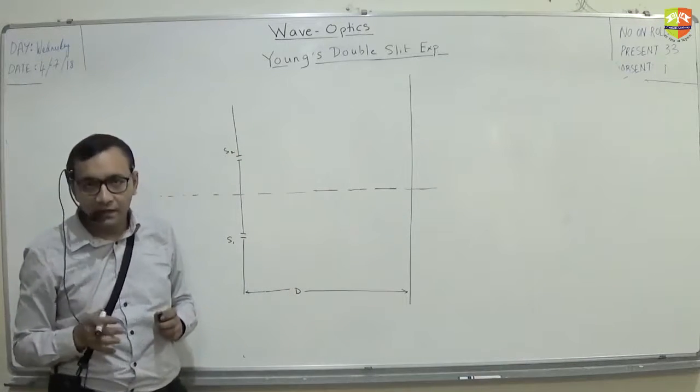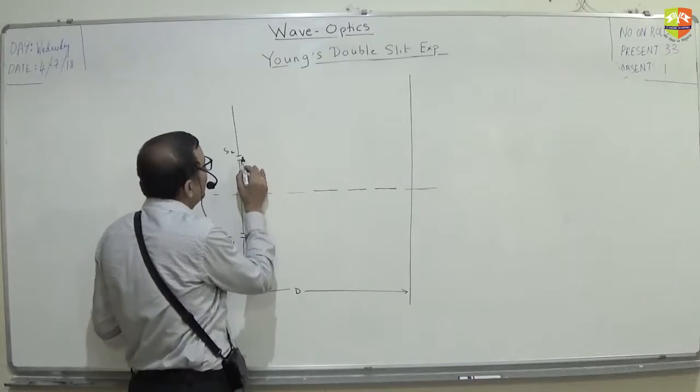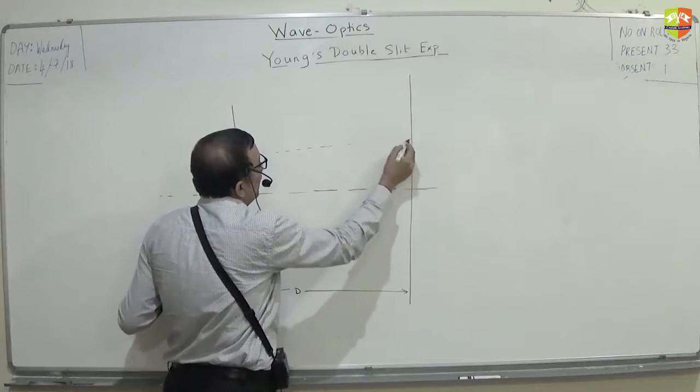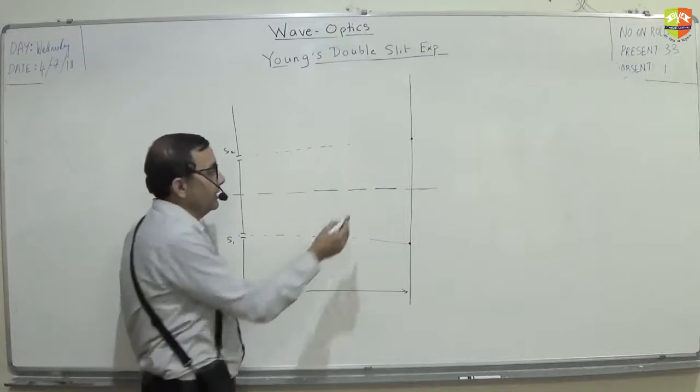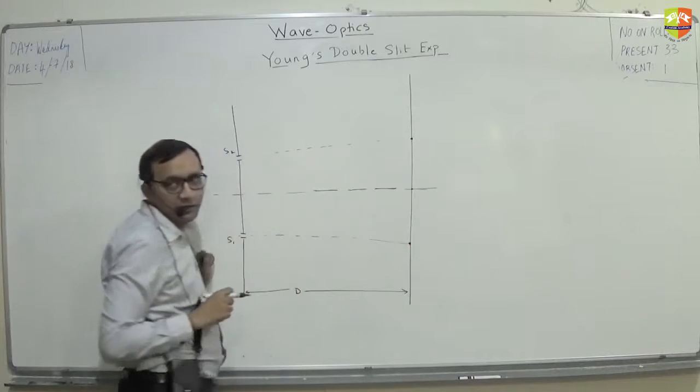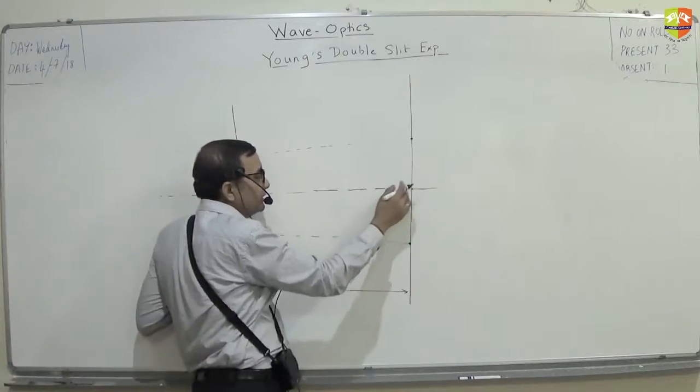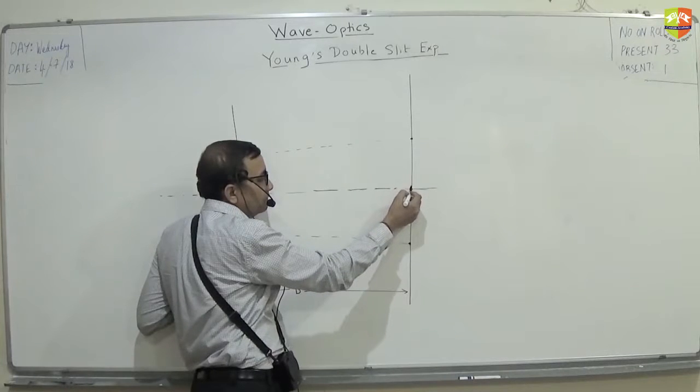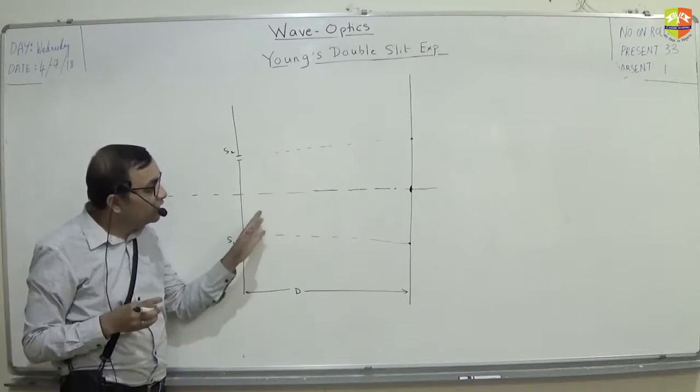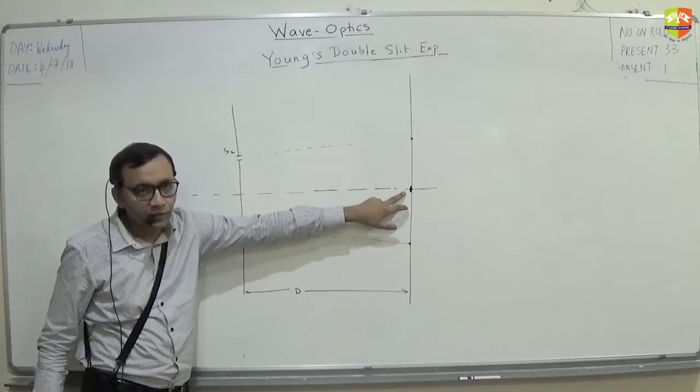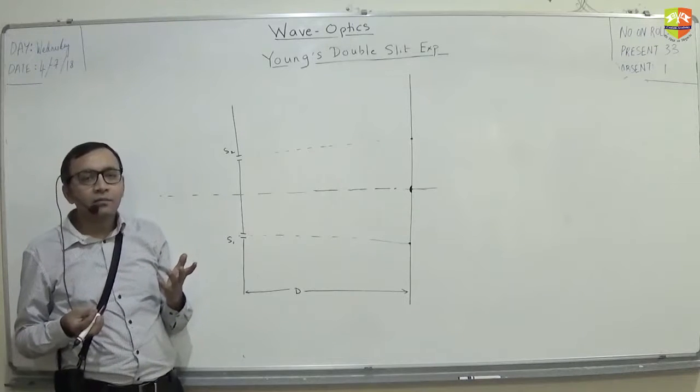Now if light is a particle then what are the things you can expect? If light is a particle, light will directly come from here and move in a straight line and here it will be bright spot and here bright spot. And here it should be what? Dark spot. This is how it should be. But what turns out is that this is the brightest spot, which is completely against what is expected had the light been a particle.